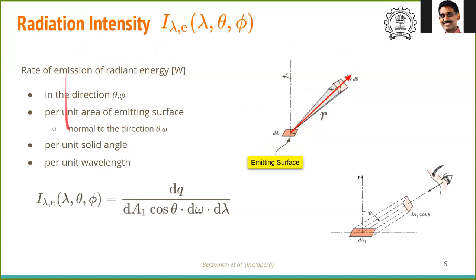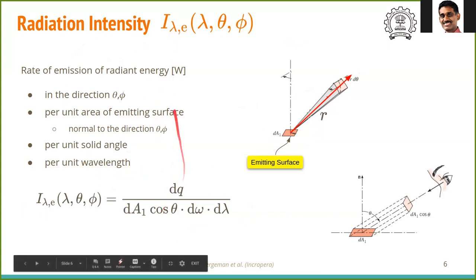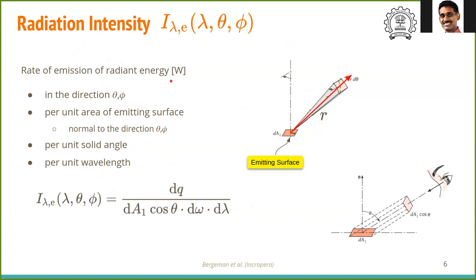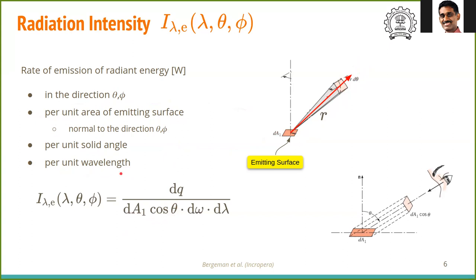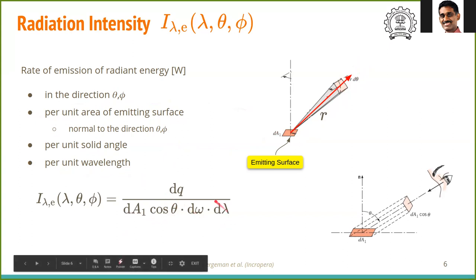Reading the entire formula: radiation intensity I is the rate of emission of radiant energy dq (in joules per second, i.e., watts), in the direction θ, φ, per unit area of the emitting surface dA₁ cosθ, per unit solid angle dω, and per unit wavelength dλ. Using this expression, we will derive several quantities.